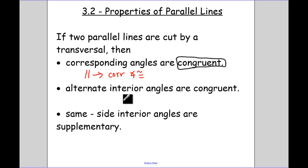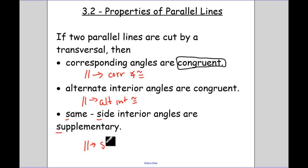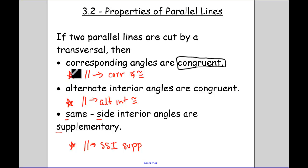Alternate interior angles are congruent. This is a theorem that we're going to prove, so parallel lines give us alternate interior angles congruent. Same side interior angles are supplementary, so parallel lines give us same side interior supplementary. When we do proofs, these are the three abbreviations you'll use when parallel lines give us congruent or supplementary special angle pairs.